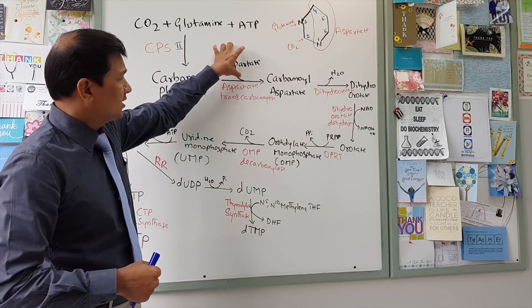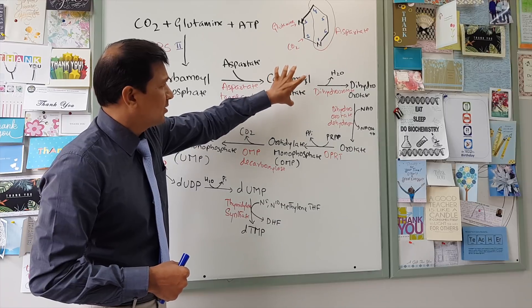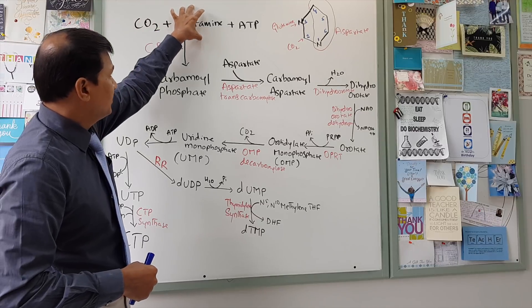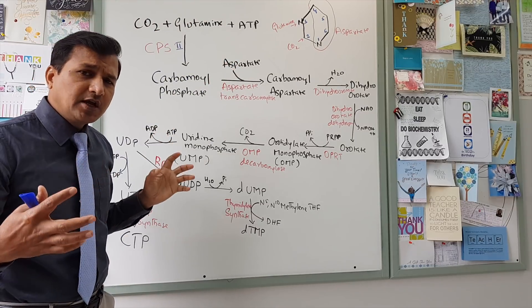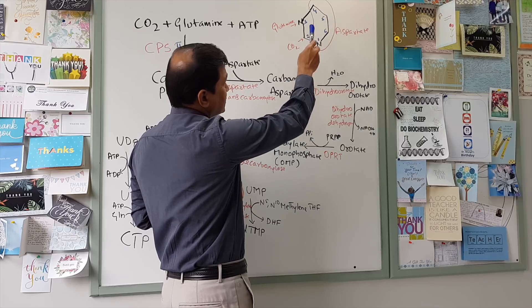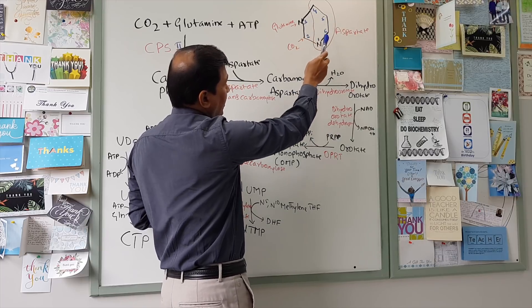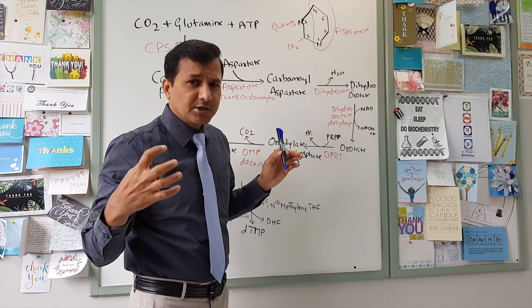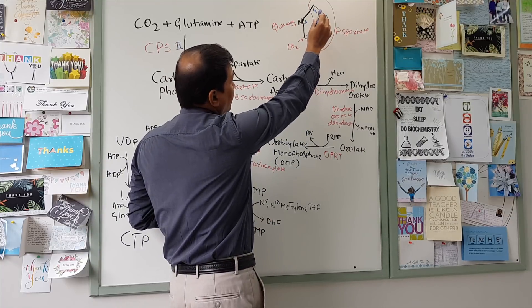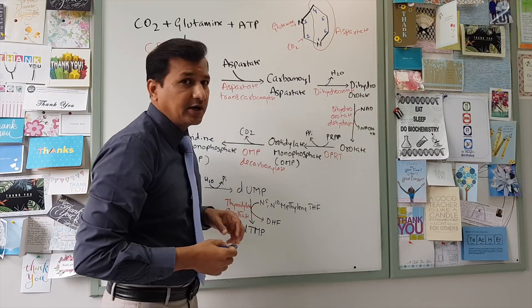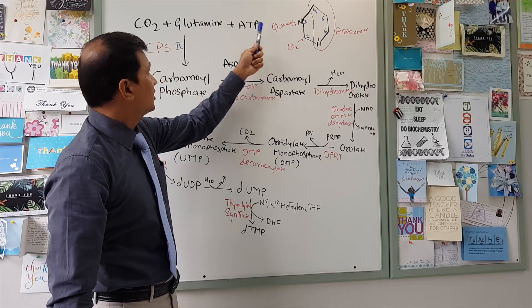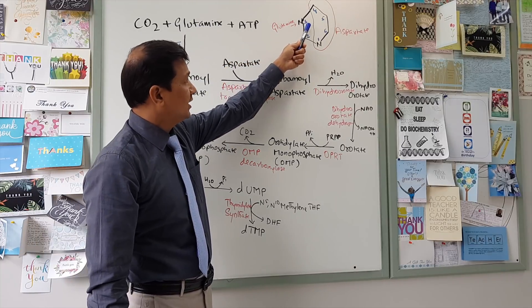By this stage we have used carbon dioxide, glutamine, and aspartate. Looking at the pyrimidine ring, it has six atoms numbered 1 through 6. Out of these six atoms, four are donated by aspartate: nitrogen 1 and carbons 4, 5, and 6 are entirely donated by aspartate. Carbon 2 is given by carbon dioxide, and glutamine donates nitrogen 3 in the pyrimidine ring.